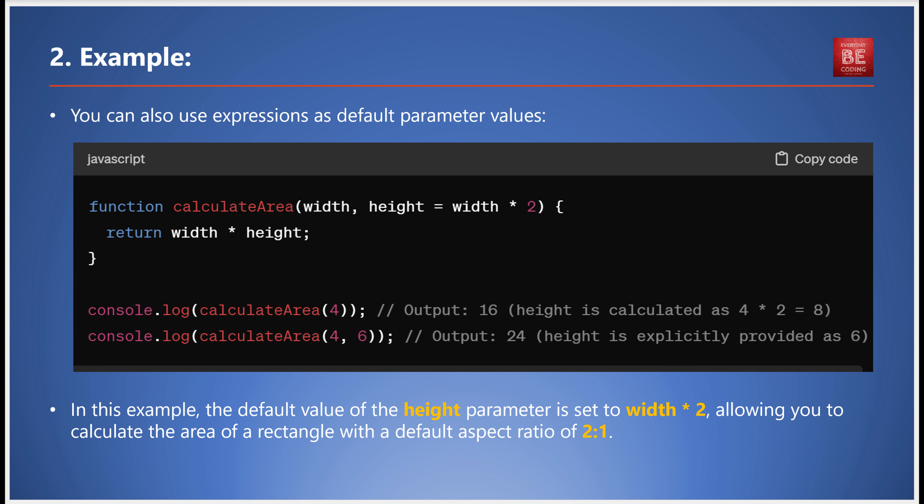These examples demonstrate how default parameters can significantly enhance the flexibility and usability of functions in JavaScript. They are particularly useful for defining functions with optional arguments or for providing fallback values when certain arguments are not provided.